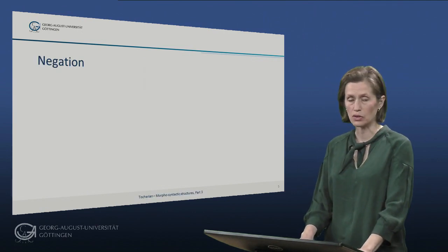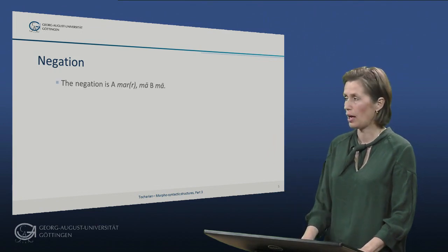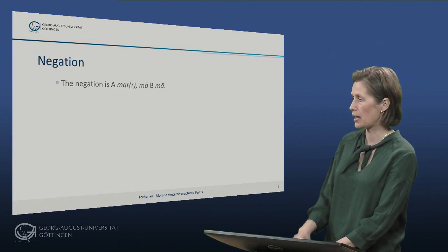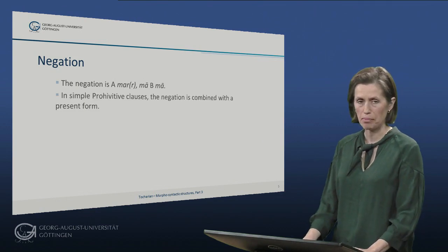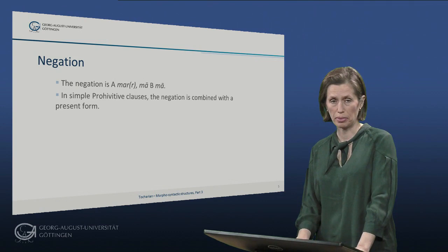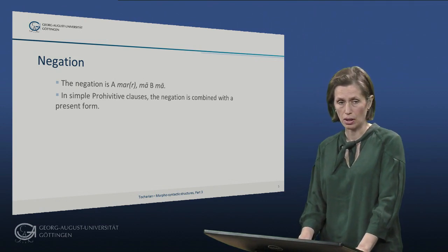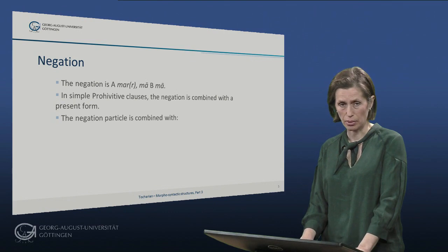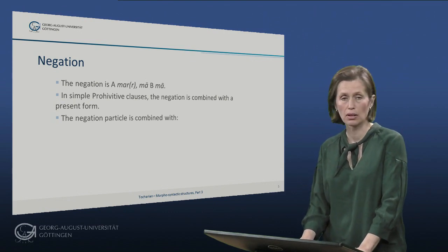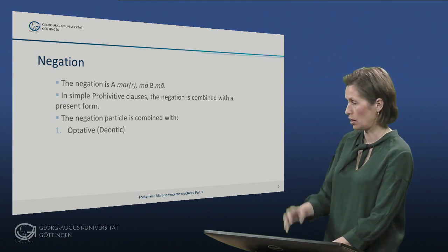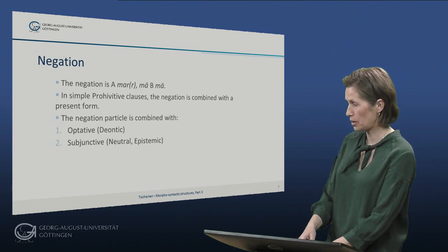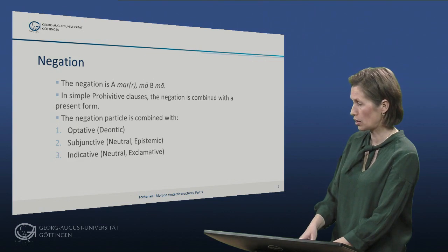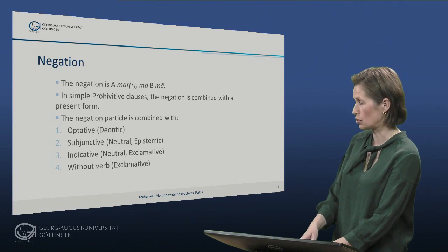Let's move over to negation. The negation particle in Tocharian A is 'ma,' 'mar,' or 'o ma,' and in Tocharian B it is 'ma.' In simple and prohibitive clauses, the negation is combined with the present form. However, the negation particle can be combined with the optative to mark deontic modality, with the subjunctive to mark neutral and epistemic modality, with the indicative to mark neutral and exclamative modality, and without a verb to mark exclamative.